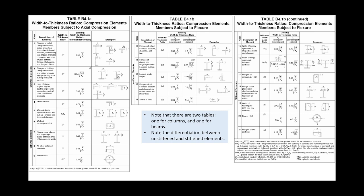When you open this table on page 16.1-16 in the spec, you'll find two tables: Table B4.1A and Table B4.1B. Table B4.1A covers width-to-thickness ratios for elements subjected to axial compression. Table B4.1B covers elements subjected to flexure. So if you're looking at columns, use B4.1A; if you're looking at beams, use B4.1B. For the sake of discussion, let's consider B4.1A.